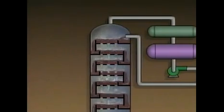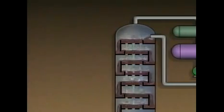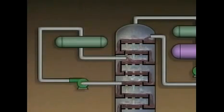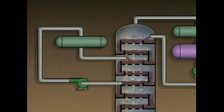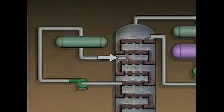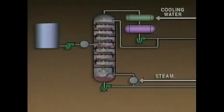Some distillation systems contain equipment known as pump-arounds. The purpose of a pump-around is to remove hot liquid from the tower and pump it through a cooler. The cooled liquid is then reintroduced at a higher level in the tower. A pump-around helps control the temperature of the internal reflux.